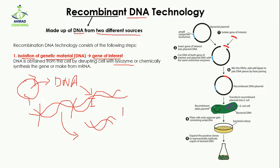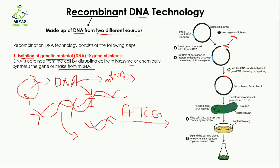You can also chemically synthesize the gene of interest — for example, if you know the sequence such as A, T, C, G, you can chemically synthesize this sequence and then you have your gene of interest. Moreover, you can also get your gene of interest from the mRNA. We know that DNA makes a copy of mRNA, and from the mRNA we get our desired protein, so you can convert this mRNA into DNA to get your gene of interest. These are the three ways to get your gene of interest.